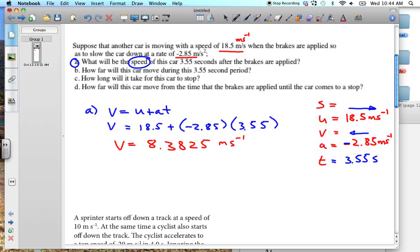And we get an answer that our V is equal to 8.3825 meters per second. But because I have got three significant figures, I must do this to three significant figures. So it's going to be 8.38 meters per second. So I've got my A part.